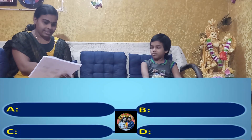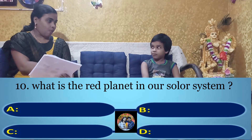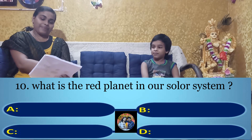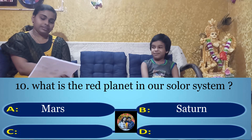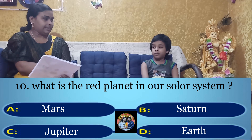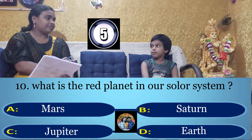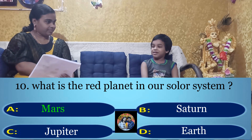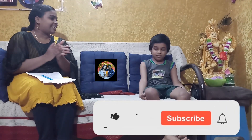Your tenth question: What is the red planet in our solar system? Option A: Mars, Option B: Saturn, Option C: Jupiter, Option D: Earth. Your time starts now. Mars. Yes, the right answer is Option A: Mars. Well done!